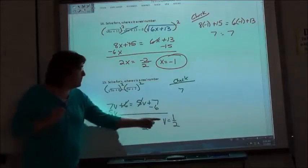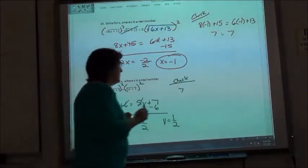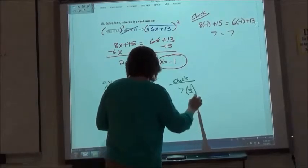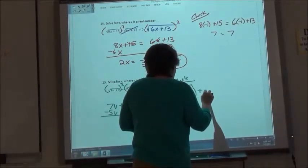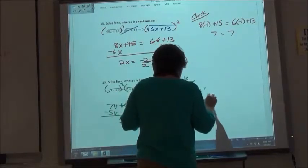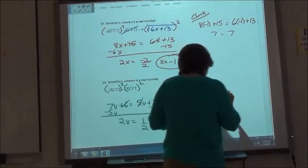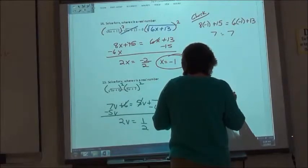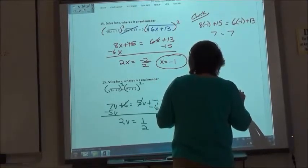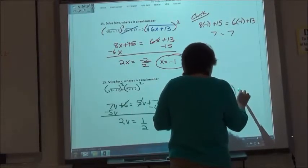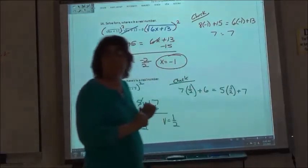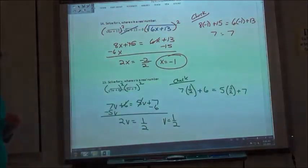You're going to do 7 times 1 half times 1 half plus 6. Does that equal? That's going to equal 5 times 1 half plus 7. Exactly. I've got to check to see if those two things actually equal each other.